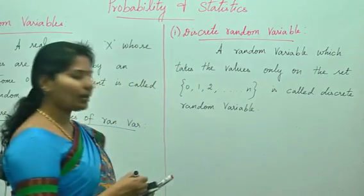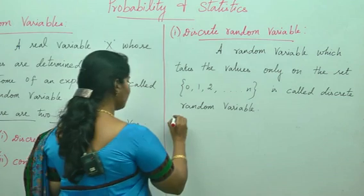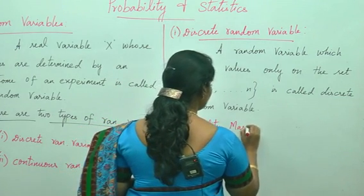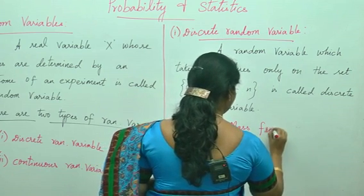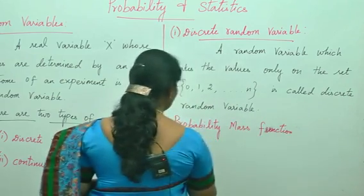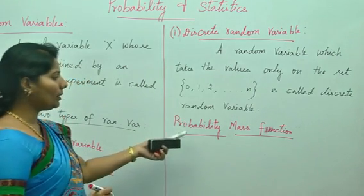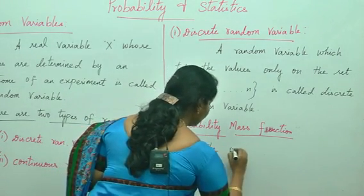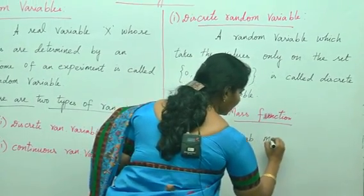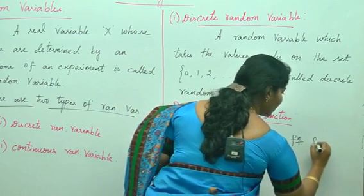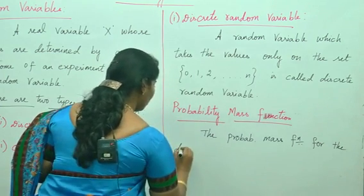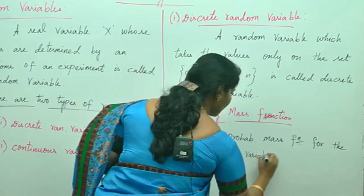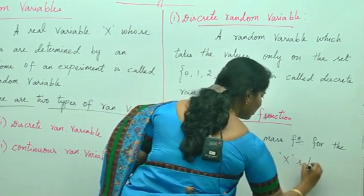To find the discrete random variable we need to use the probability mass function. The probability mass function for the discrete random variable x satisfies the following conditions.